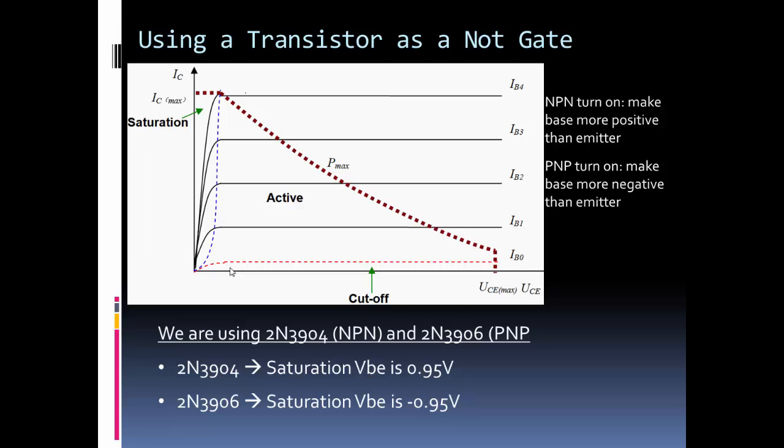Lastly, I show the output curve of a transistor. A transistor can be used like a switch and that's how we're using it - we either make it act like a short or we make it act like an open. Really though, a transistor can also be used for amplifying signals and that's where you use it in this active region. But what we're doing is we're using it in cutoff to act like an open and we're using it in saturation to act like a short.